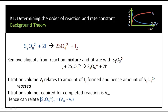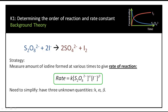Just to be clear: persulfate is S₂O₈²⁻, thiosulfate is S₂O₃²⁻. For any rate of reaction, we can say the rate equals some rate constant K times the concentration of reagents, each raised to some power. So the rate equals K times the concentration of persulfate raised to the power alpha, times the concentration of iodide raised to the power beta. K is the rate constant, a very important quantity in kinetics. Alpha and beta are the orders of reaction, and alpha plus beta is the overall order. These indicate how dependent the rate is on the concentration of each individual species.